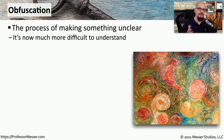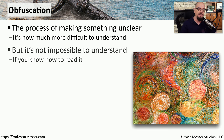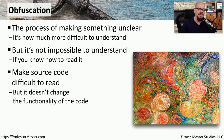Obfuscation is the process of taking something that would commonly be relatively easy to understand and making it very difficult to understand. This doesn't make it impossible to understand, but it does make it a lot more difficult for humans to read through some information and understand exactly what that information is saying. We commonly see obfuscation done with source code, meaning the programming language works properly, but humans aren't able to read through the code and understand the logic of that program.